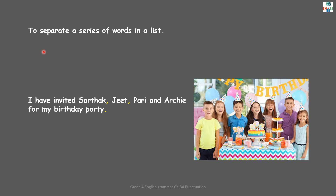Another use of the comma is when you want to separate a series of words in a list. For example: 'I have invited Sarthak, Jeet, Pari and Archie for my birthday party.' Here I have used more than two names, so I use a comma to separate them. After each name I put a comma: Sarthak, comma, Jeet, comma, Pari — and so on. There are other uses for the comma, but those we will learn in further grades.